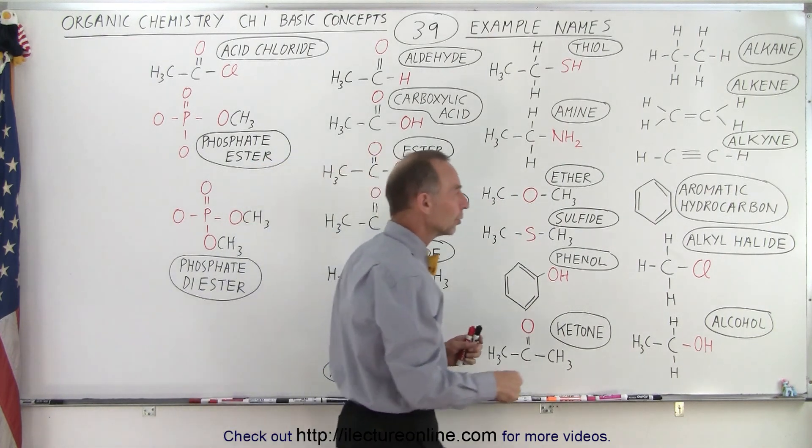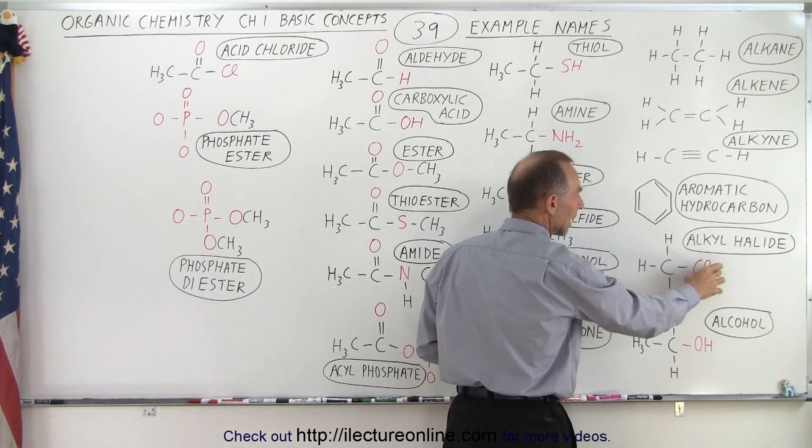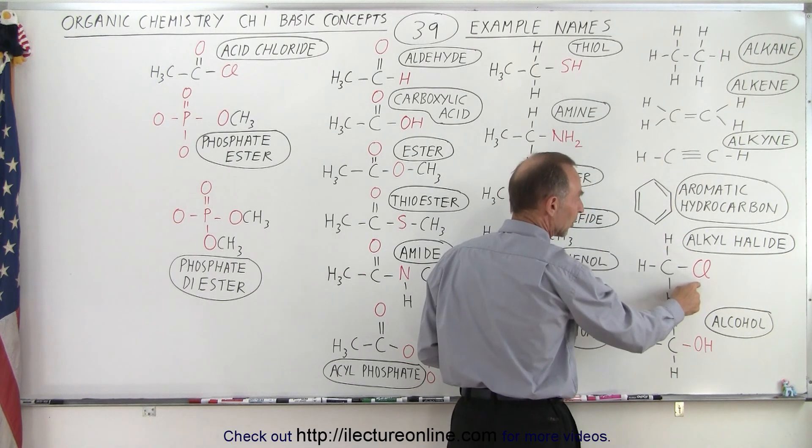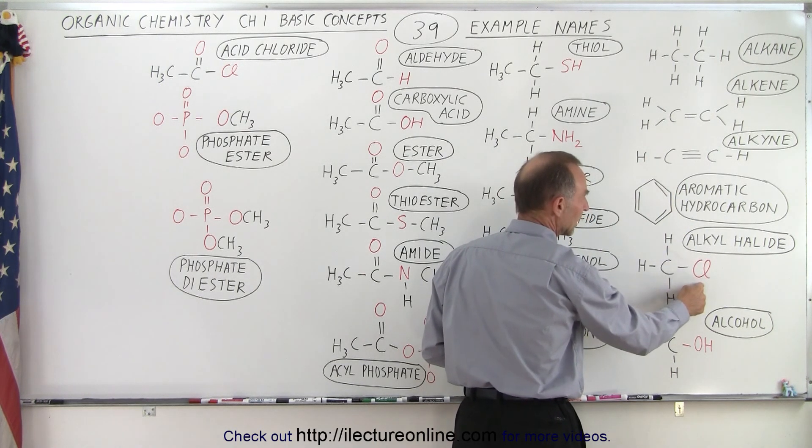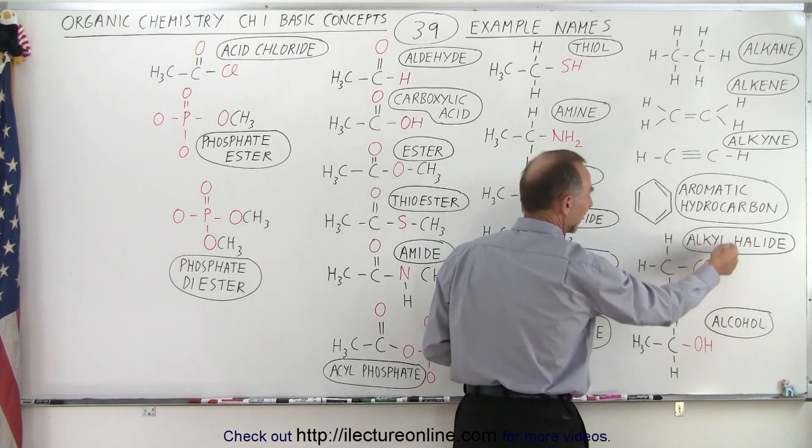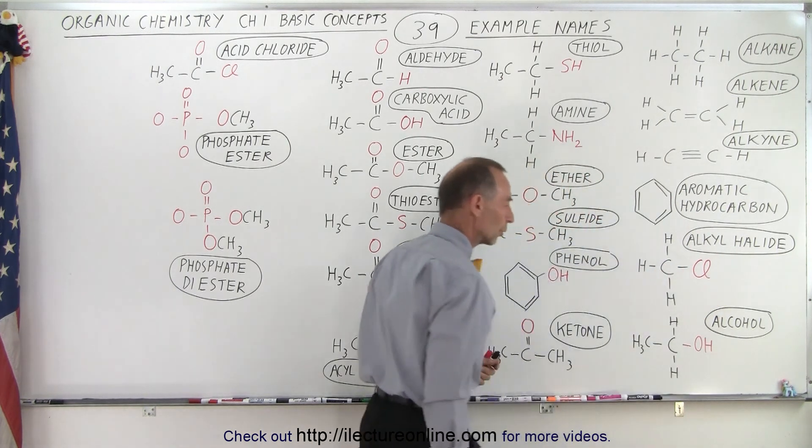Then we have what we call the alkyl halide. Now halide means that we're using one of the atoms in the second to last column of the periodic table: fluorine, chlorine, bromine, and iodine. So here we have the chlorine that gives it a halide, and alkyl meaning that there's a single carbon with the chlorine.